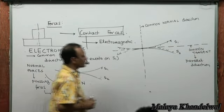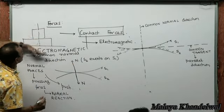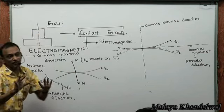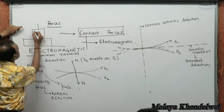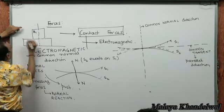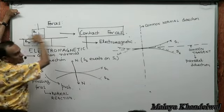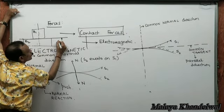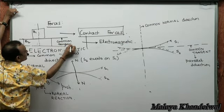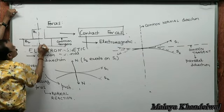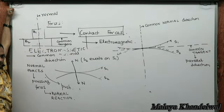When the normal direction is clearly defined there is no ambiguity. For example, for body B1 and body B2, the parallel direction is the common tangent direction and the normal direction is perpendicular to it — there is no ambiguity here.